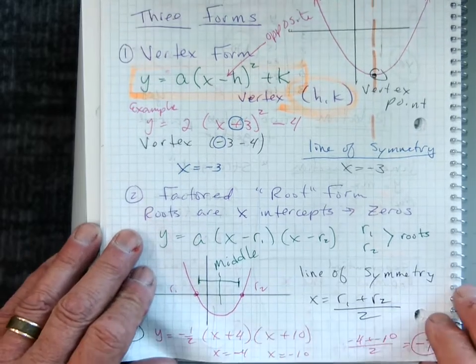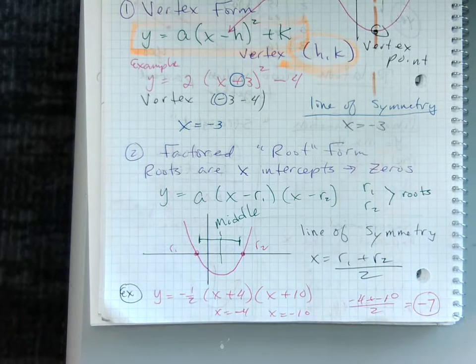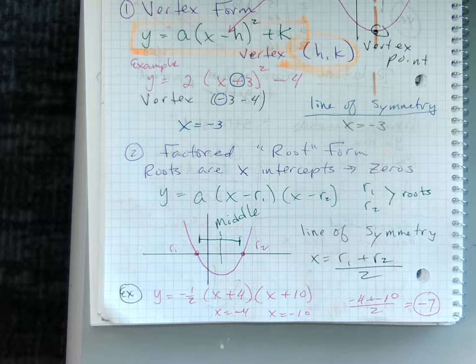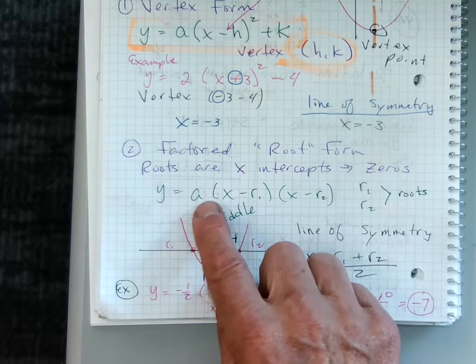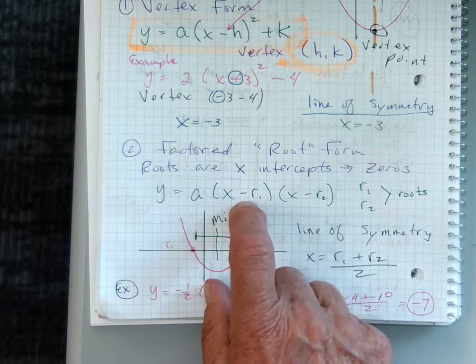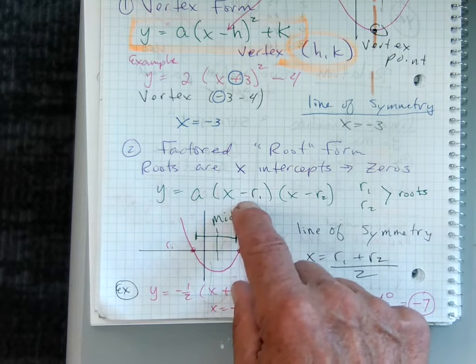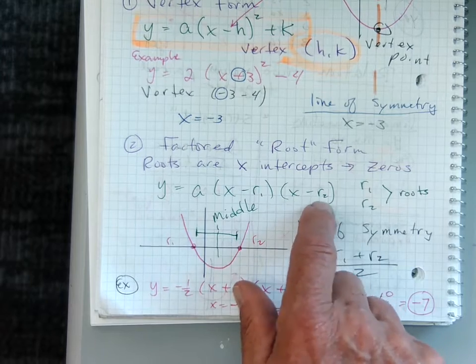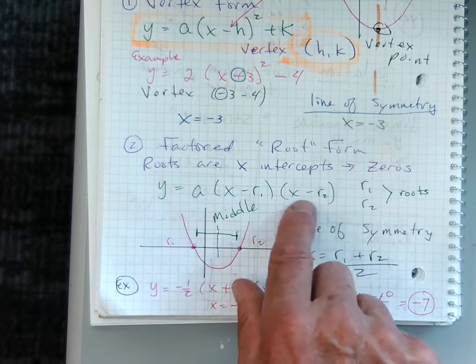The second form is the factored form, or the root form. So it comes in a factored form. So the book likes this, a times parentheses x minus r1, that's just a number, root one, parentheses x minus r2. These are like our mini equations. We've done this before.